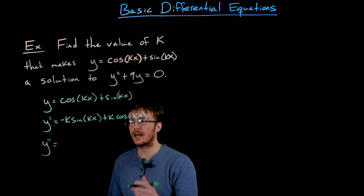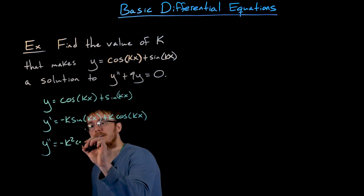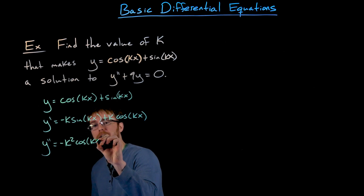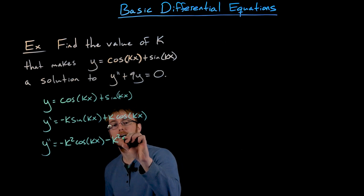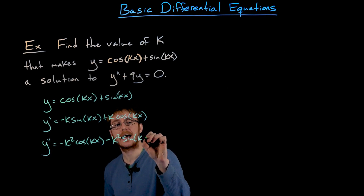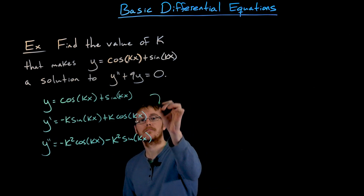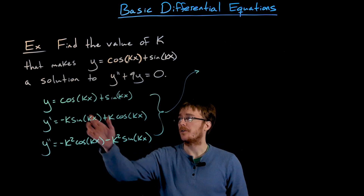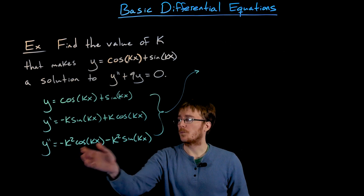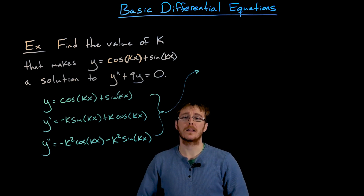Differentiating one more time, again using the chain rule, gives us negative k squared times cosine of kx for that first term, and negative k squared times sine of kx for that second term. Now that we've found y and y double prime, we can plug them into our differential equation, and hopefully this will allow us to find our unknown constant k.